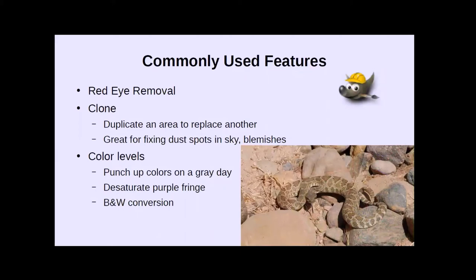Red eye removal is one that we get into a lot. If you use the camera's built-in flash, you're very often going to get red eye, because the light in the subject's eyes on their retinas is going to be reflected back into the lens, and that retina is full of red blood cells. The subject's pupils are often very big. Sometimes sophisticated flashes will flash a few times before actually taking the picture to narrow those pupils a little bit. If you can get the flash off the camera, that's a great way to do it. There is also an automatic red eye removal function that works extremely well.